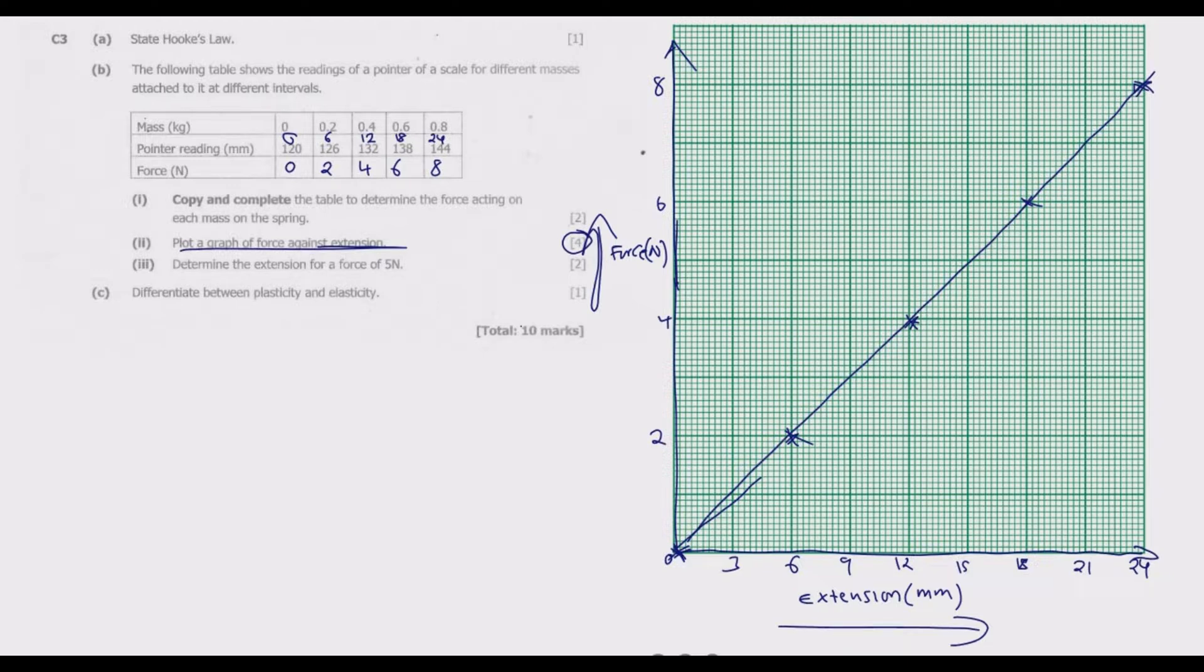We move to Roman numeral 3: Determine the extension for a force of 5 newtons. These are increasing in the interval of 2, so this is 1, then 3, then 5. You join 5 all the way up to this point where it meets this line and then it comes down. What you notice is this is exactly 15. So the extension is basically 15 millimeter. The reading on the pointer will be 120 plus the extension which is 15, which is 135 millimeter. But the extension itself is 15 millimeter.